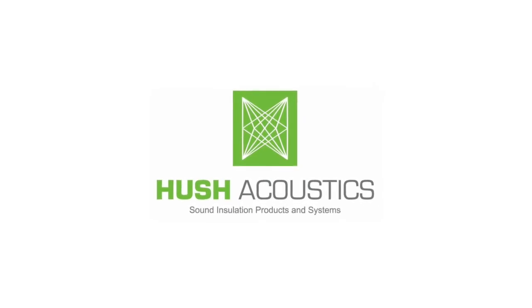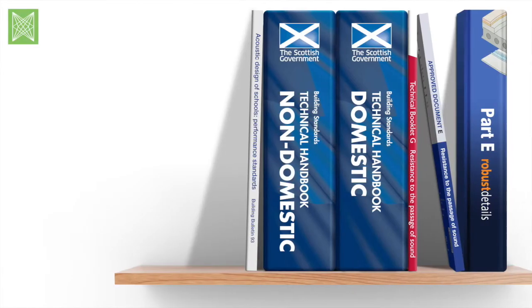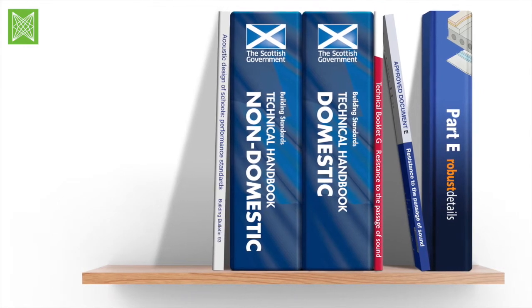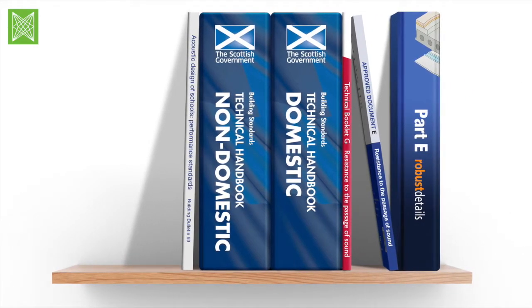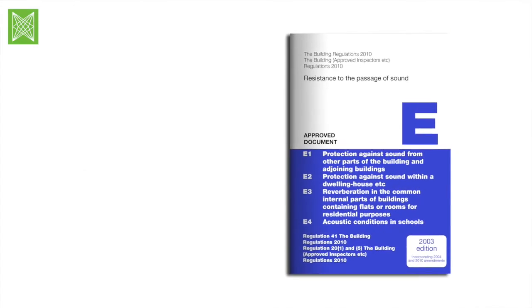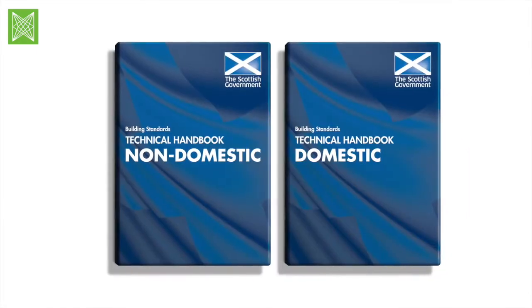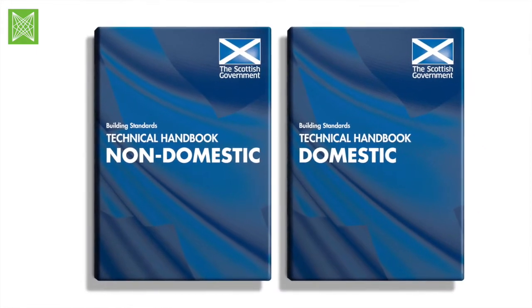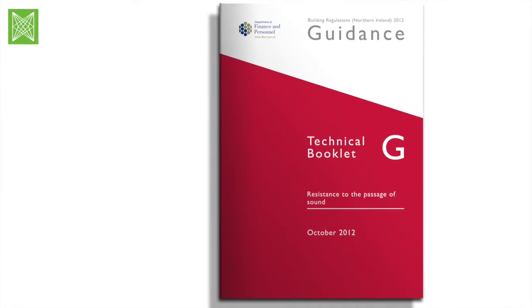HUSH provides acoustic products and systems for all types of buildings and complies with all UK building regulations: Approved Document E for England and Wales, Section 5 Noise of the Scottish Building Standards, and Part G for Northern Ireland.